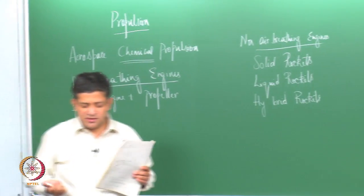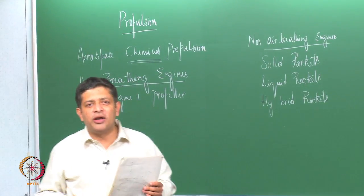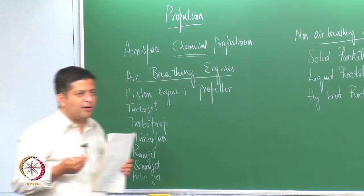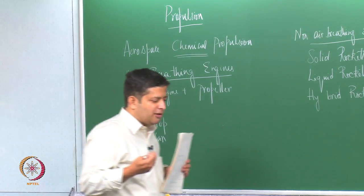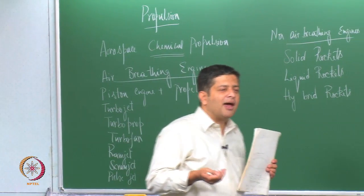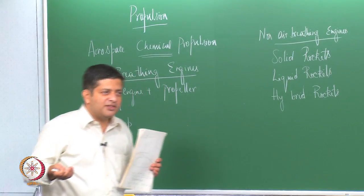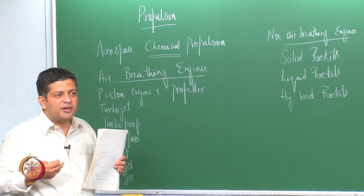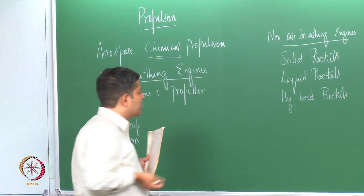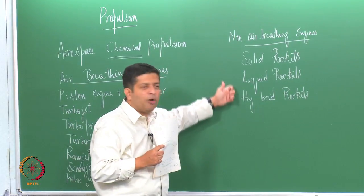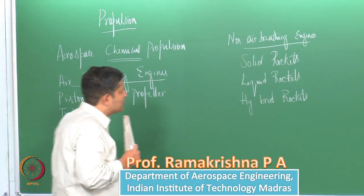Solid rockets are named so because both the fuel and oxidizer are in a solid phase, hence the name solid rockets. Whereas in a liquid rocket, you have the fuel and oxidizer being in a liquid phase. Hybrid is essentially a combination of these two systems.